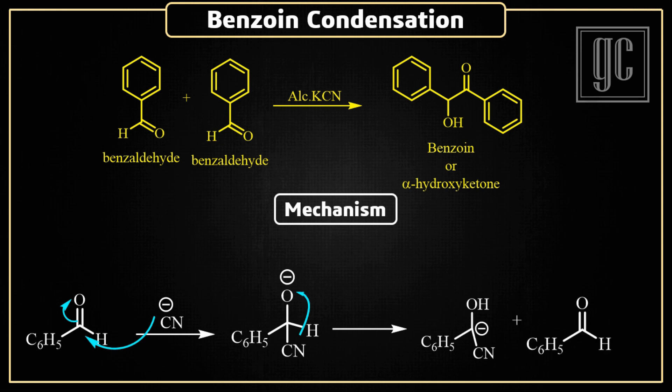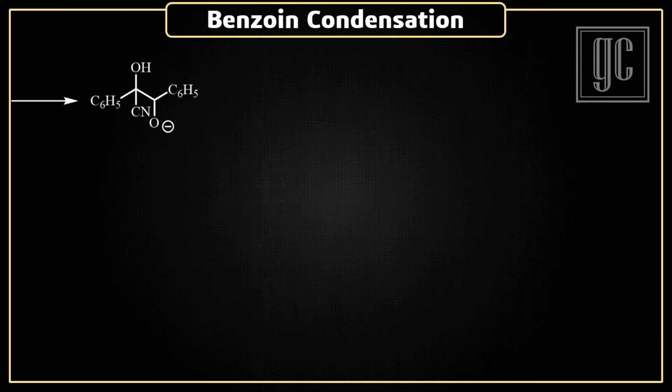This carbanion attacks on the carbonyl group of another aldehyde molecule, and rearrangement of pi electrons takes place. As a result, a negative charge on the oxygen of the aldehyde molecule is generated. This negative charge is then neutralized by a proton shift from the hydroxyl group, and a new negative charge is generated.